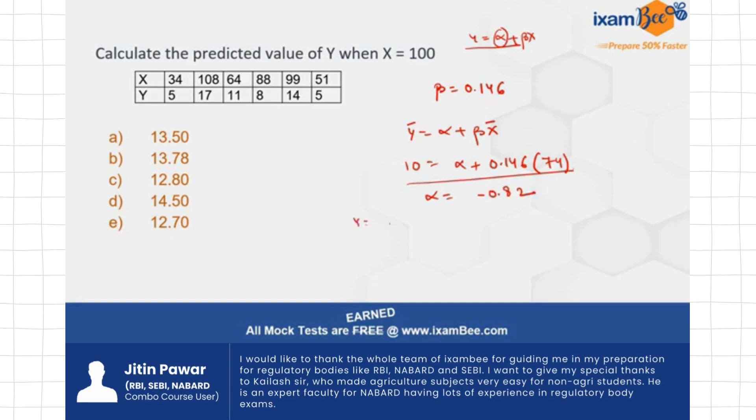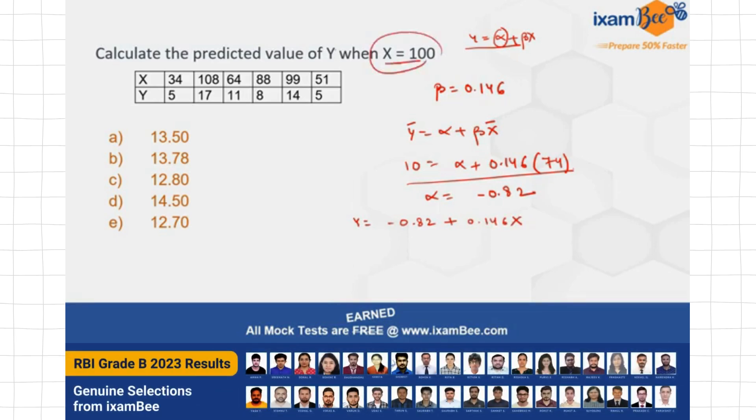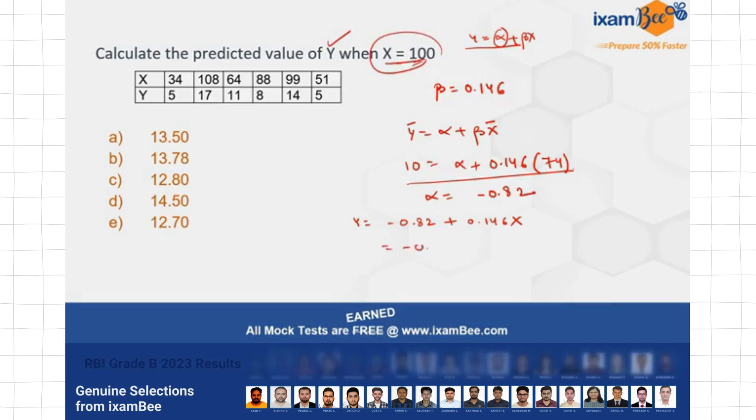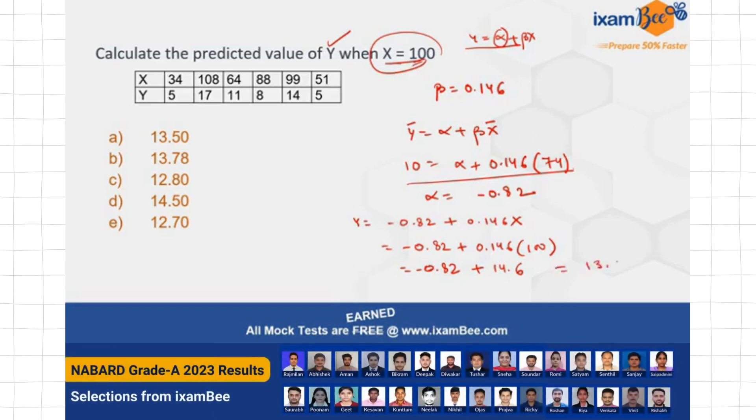Now, my regression equation becomes y is equal to minus 0.82 plus 0.146x. This is my regression equation. Now, I have to find what is the predicted value of y when x is 100. So plug in the value of x here to be equal to 100. So minus 0.82 plus 0.146 times 100. This is going to be minus 0.82 plus 14.6. So this is going to be 13.78. This is your answer. So the right option is option B. I hope you've understood this question.